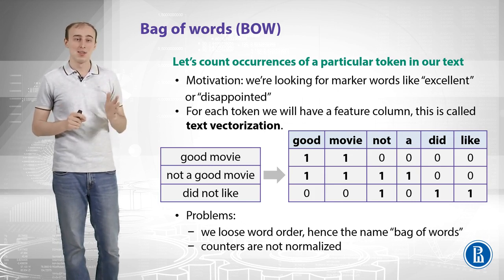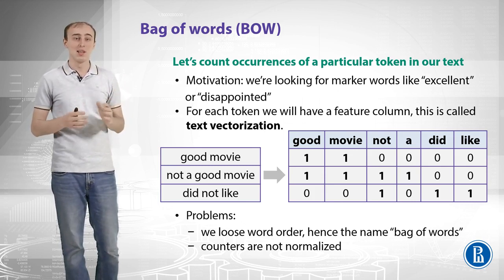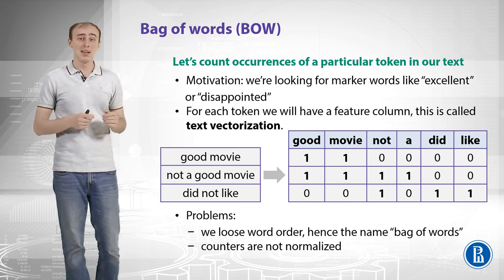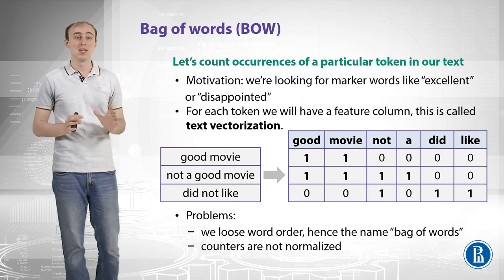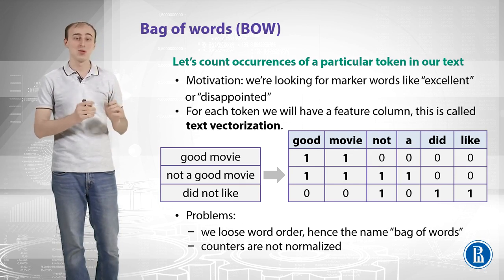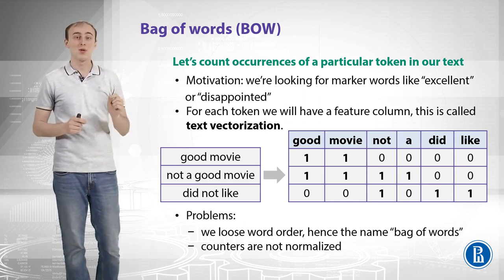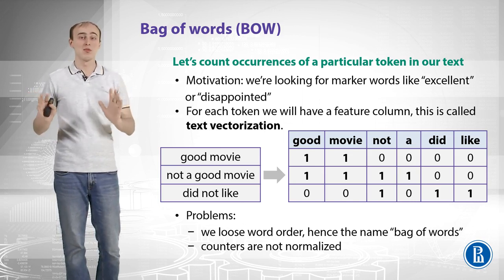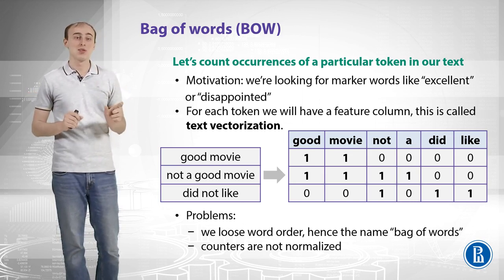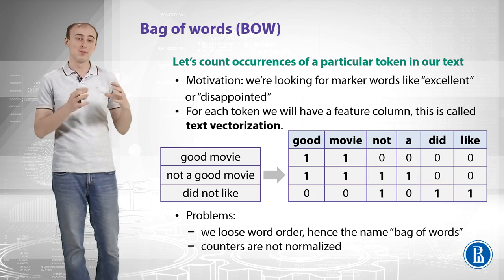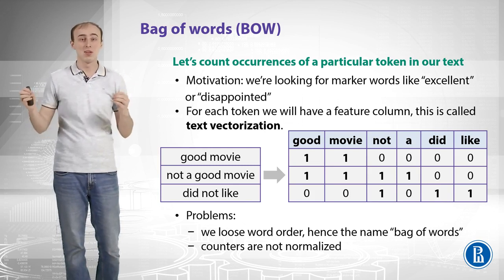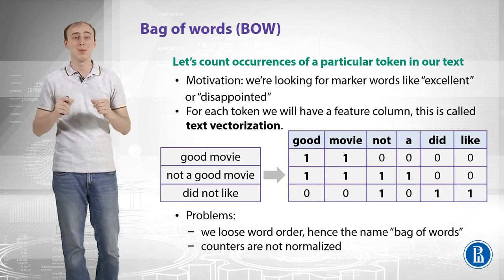Let's take an example of three reviews: 'good movie', 'not a good movie', 'didn't like'. And let's take all the possible words or tokens that we have in our documents. For each such token, let's introduce a new feature or column that corresponds to that particular word. That is a pretty huge matrix of numbers, and how we translate our text into a vector or a row in that matrix.